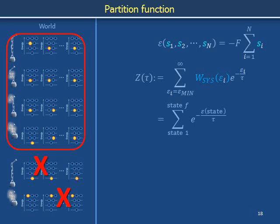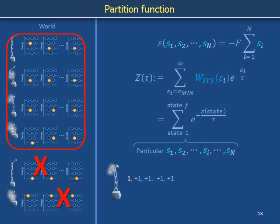For the chain in this slide deck, each individual state of the system is specified by indicating the particular state of each individual link: S1, S2, and so forth, up through S sub N. For example, the state with the link attached to the nail pointing up and the other four links pointing down is named minus 1, plus 1, plus 1, plus 1, plus 1.